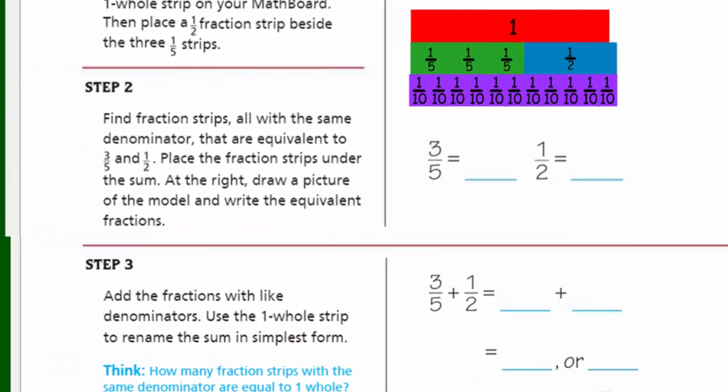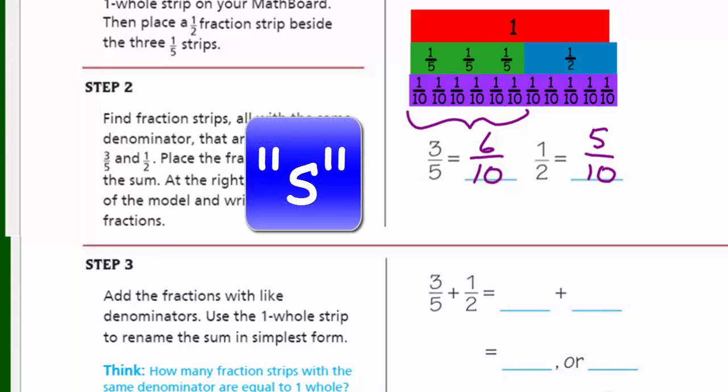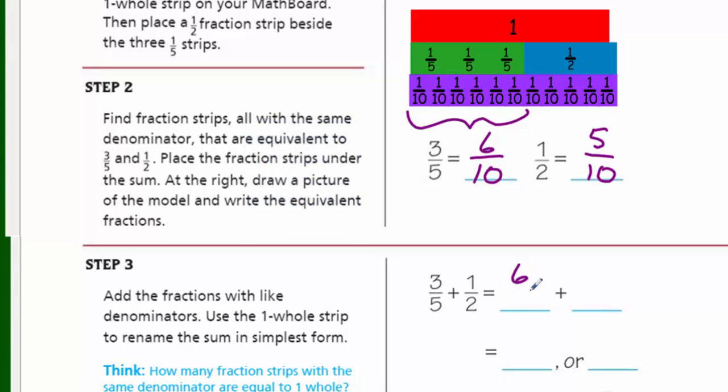So let's finish up what we needed to do. We placed the fraction strips under the sum. At the right, we didn't draw a picture. Our picture is showing the one-tenths underneath our model. But it does say to write the equivalent fractions. Let's do that. So three-fifths, we learned, was equal to six-tenths listed here. And then one-half was equal to five-tenths, and those were the remaining ones here. Step three, add the fractions with like denominators. Now we have the same denominator. Use the one-whole strip to rename the sum in simplest form. So we have three-fifths plus one-half. So we'll rewrite these fractions down. Six-tenths plus five-tenths is equal to eleven-tenths, or that makes one whole because our ten-tenths makes a whole, and then we have one-tenth left over, and that's true. Ten-tenths plus one-tenth is eleven-tenths.